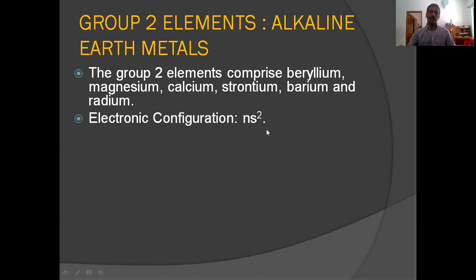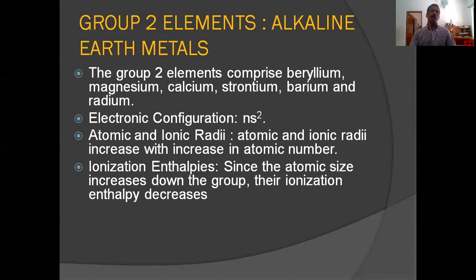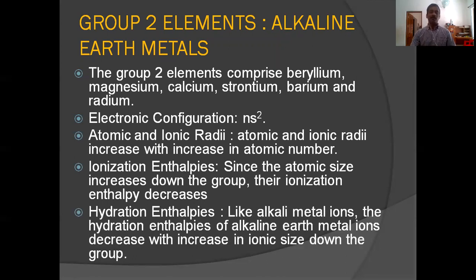They can release two electrons because of their electropositive character. Atomic and ionic radii increase as we move down the group. And since the atomic size increases down the group, their ionization enthalpy decreases down the group.